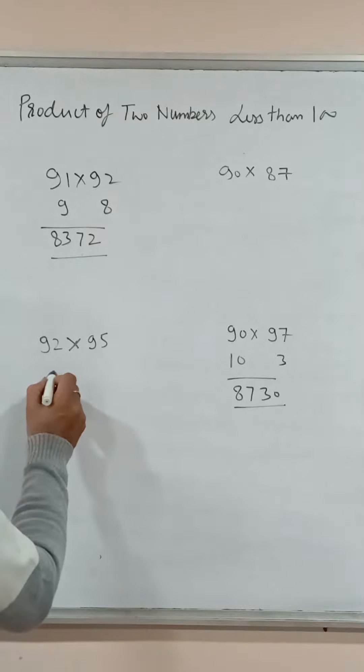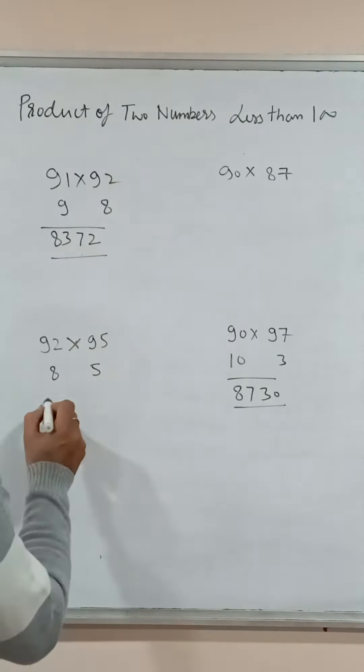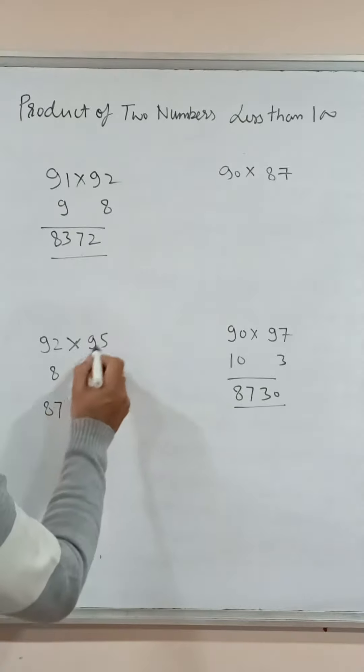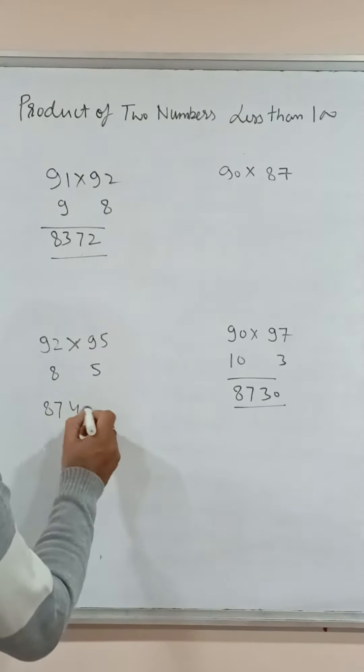92 into 95. 92 is 8 small and 95 is 5 small. 92 minus 5 is 87 and 8 times 5 is 40. This is product of 92 and 95.